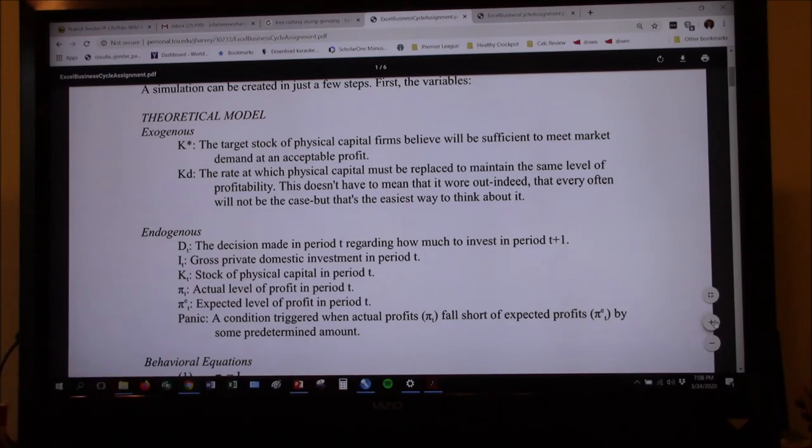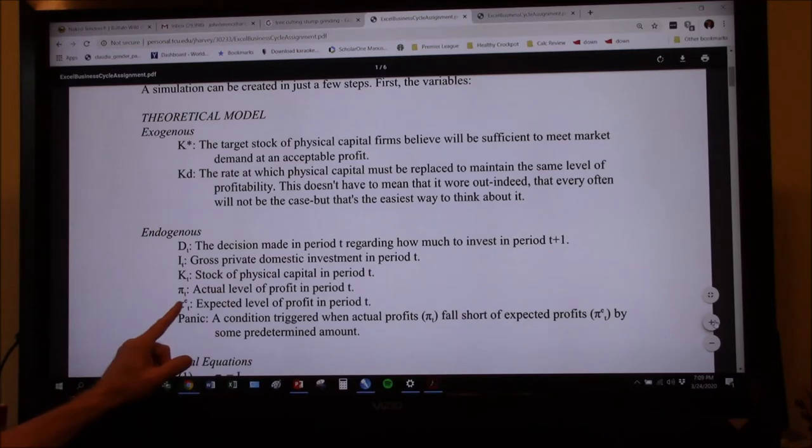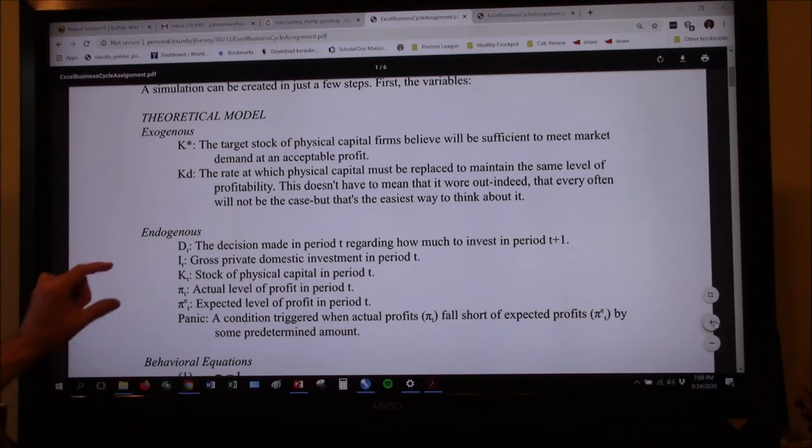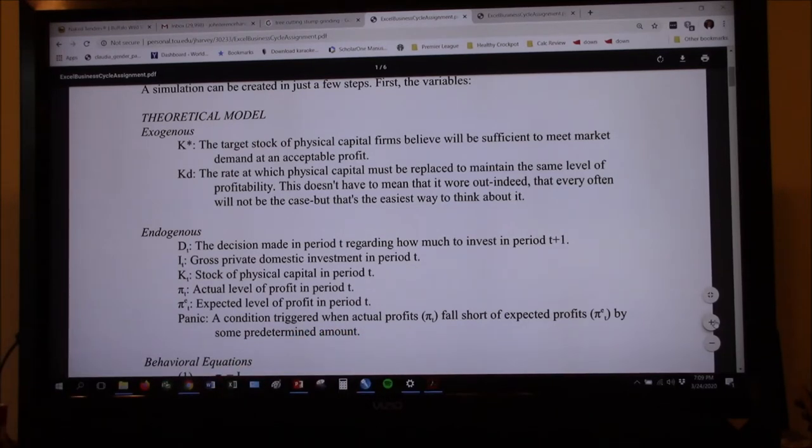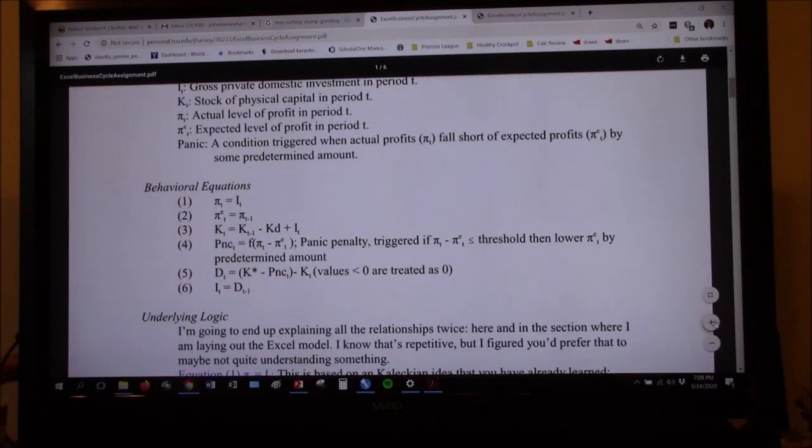K sub T is the total stock of capital, which we've already had on the Davidson graph. It's the total dollar value of all existing restaurants or whatever. Now, here's where the problem is going to be. Pi sub T is the actual level of profit in period T. And pi sub T with a superscript E is going to be the expected level of profit in period T. And of course, what's going to happen is those are going to differ and it's going to cause different reactions on the part of the investor. There's going to be a panic condition, a condition triggered when actual profits fall short of expected profits by some predetermined amount. We'll determine that amount here in just a second. So those are all the variables in the model.